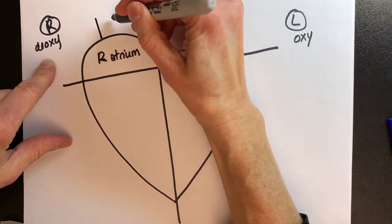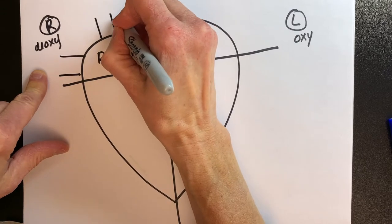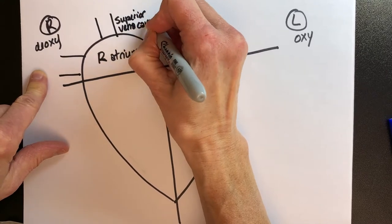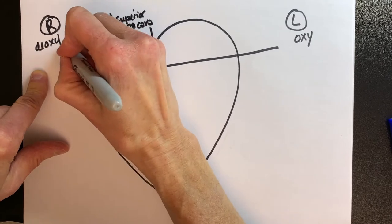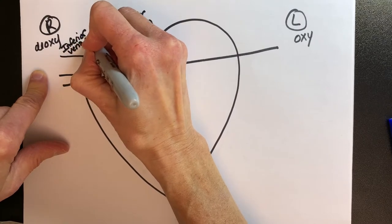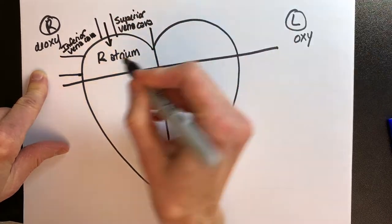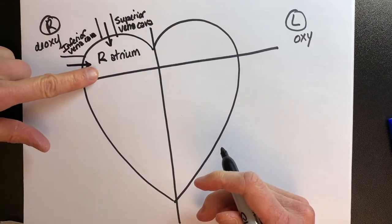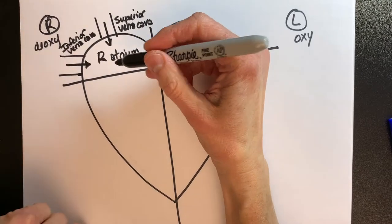So let's go into the right atrium with our deoxygenated blood. How are we going to get in? We're going to go through two large portals. One is called the superior vena cava, and the other is the inferior vena cava. Our deoxygenated blood enters through the superior and inferior vena cava from the systemic circulation and returns to the right atrium.